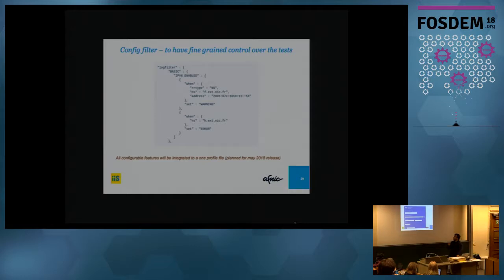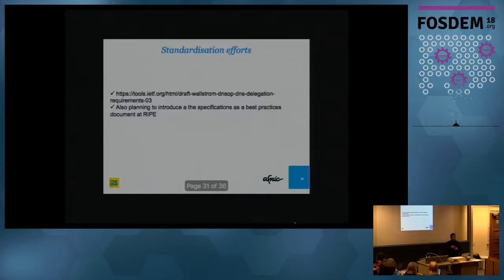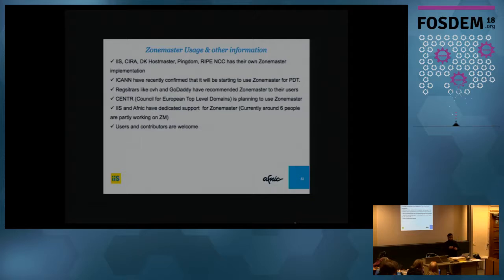Currently these configuration options are in different files, but in the future there will be a single profile file. You can run ZoneMaster CLI with the --profile flag and apply your custom configurations. Regarding standardization, an attempt was made at the IETF — it received mixed feedback — so the current plan is to push it as a best practice document at RIPE. As for who uses ZoneMaster: IIS has its own implementation, Pingdom uses it to monitor Swedish government sites for DNSSEC, RIPE NCC is using it, and ICANN has confirmed it will use ZoneMaster for PDT. Registrars like GoDaddy link to ZoneMaster, and CENTR plans to use it for statistics.